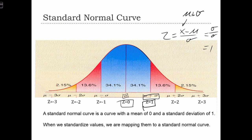So a standard normal curve is a curve with a mean of zero and a standard deviation of one. When we map X values to Z-scores, we're essentially remapping them into the scale of a standard normal curve.